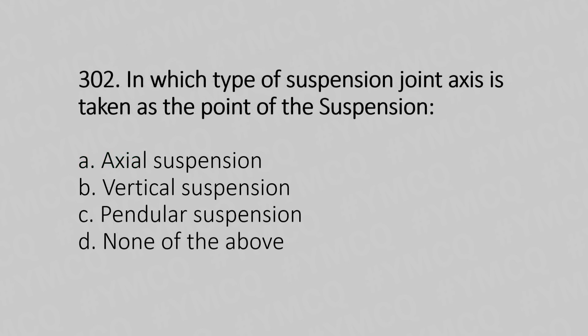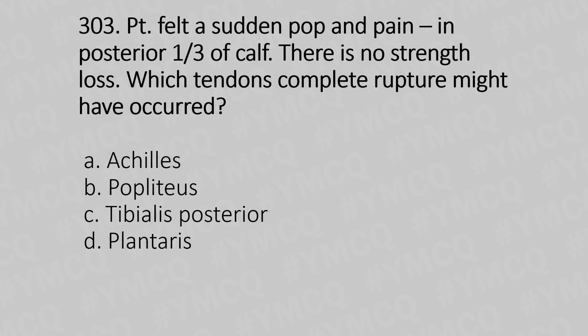Question 302: In which type of suspension joint is the axis taken as the point of suspension? Option A: axial suspension. Option B: vertical suspension. Option C: pendular suspension. Option D: none of the above. The answer is Option A, axial suspension.